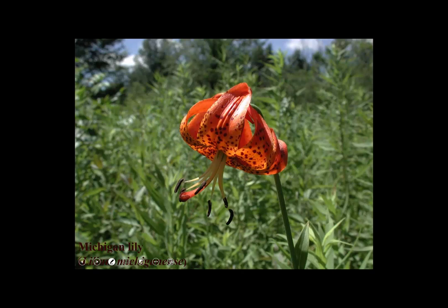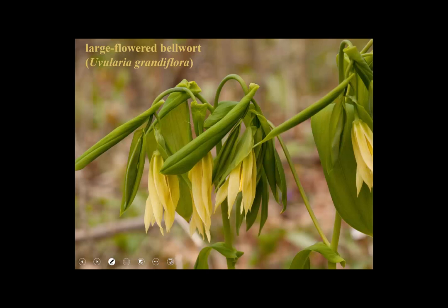They are monocots, and their flower parts are in threes. This lily has three sepals and three petals that look so much alike you can barely distinguish them — sometimes called tepals. There are six stamens, and a pistil consisting of a syncarpous gynoecium of three carpels, typically maturing into a capsule.